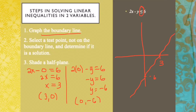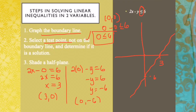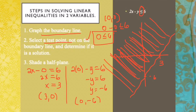The next step is the test point. Use (0, 0): we have 0 minus 0 less than or equal to 6 — is 0 less than or equal to 6? Yes. Therefore, we shade the side where (0, 0) is located. All points in the shaded region are part of the solution set.